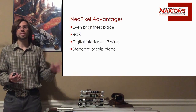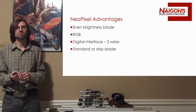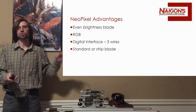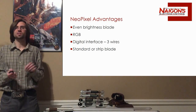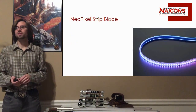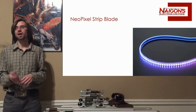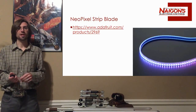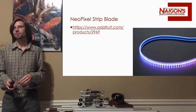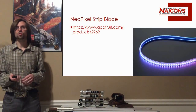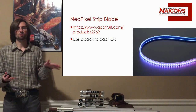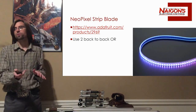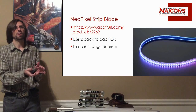You can also do standard style five millimeter LEDs — there are NeoPixel LEDs like that — or you can use the strip blade. Let's look at the strip blade first. Here's a link to one I purchased from Adafruit. It's a 144 LED per meter strip. There are two ways to make this into a blade: you can put them back to back, or you can do three in a triangular prism fashion.